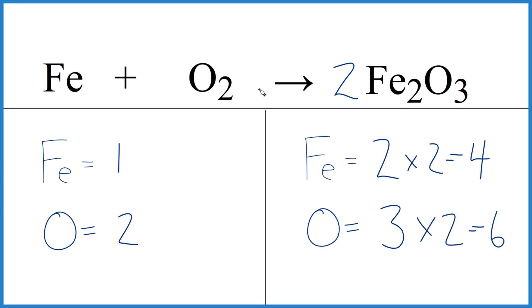Now I have an even number. That's going to make this really easy. Two times three, that equals six. Oxygen atoms are balanced.